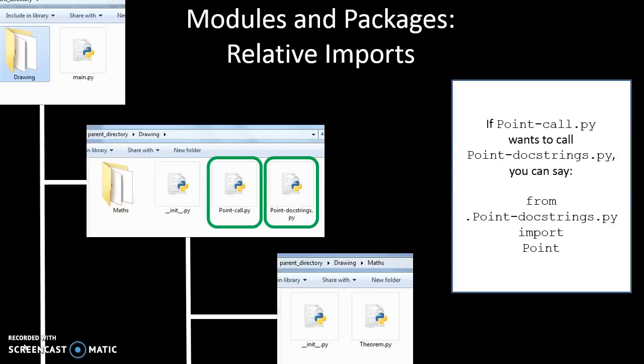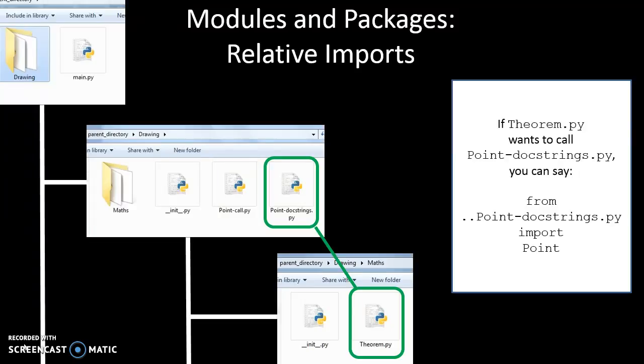So let's say in this case if the file point-call wants to call point-docstrings, just say from .point-docstrings import Point. Whereas if the theorem module wants to call point-docstrings one up, then you have to say in the theorem module from ..point-docstrings import Point. So that's the dot or the dot-dot—current directory or one directory up from where I'm at.